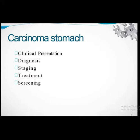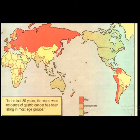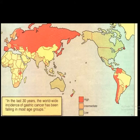We are going to discuss carcinoma of the stomach — its clinical presentation, diagnosis, staging, treatment, and screening. The worldwide incidence of gastric cancer has been falling in most countries. The red zone indicates high incidence, the orange zone intermediate incidence, and the green zone low incidence areas. Despite this decline, a major portion of the world still has a high incidence of gastric cancer.